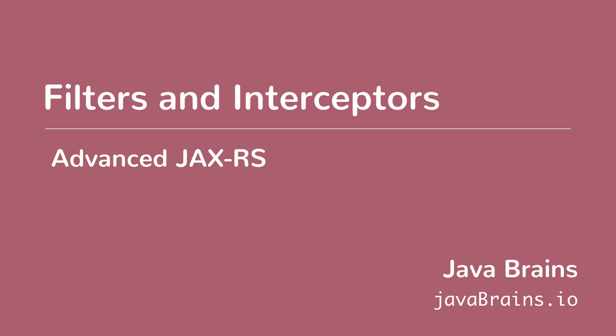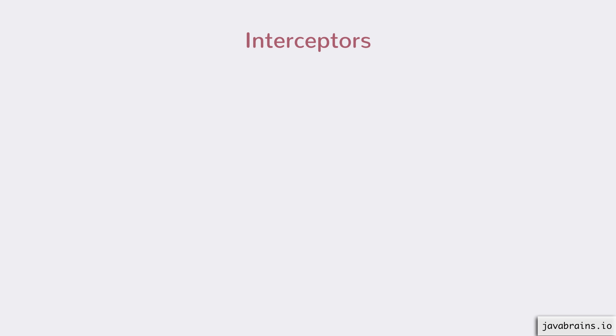We did cover filters in the previous unit — we used them to do logging, and we used them to do authentication and authorization. What we didn't cover is another entity called interceptors that JAX-RS provides. Just like filters, interceptors have a similar model — they intercept requests, and you can intercept both a request and a response, just like with a filter. But you might be wondering: why do we need interceptors when we already have filters? What's the difference between the two?